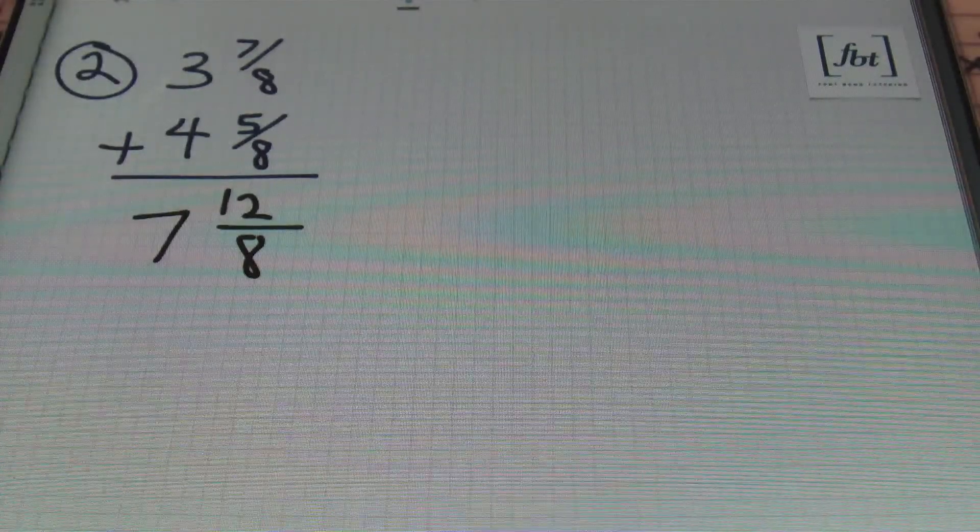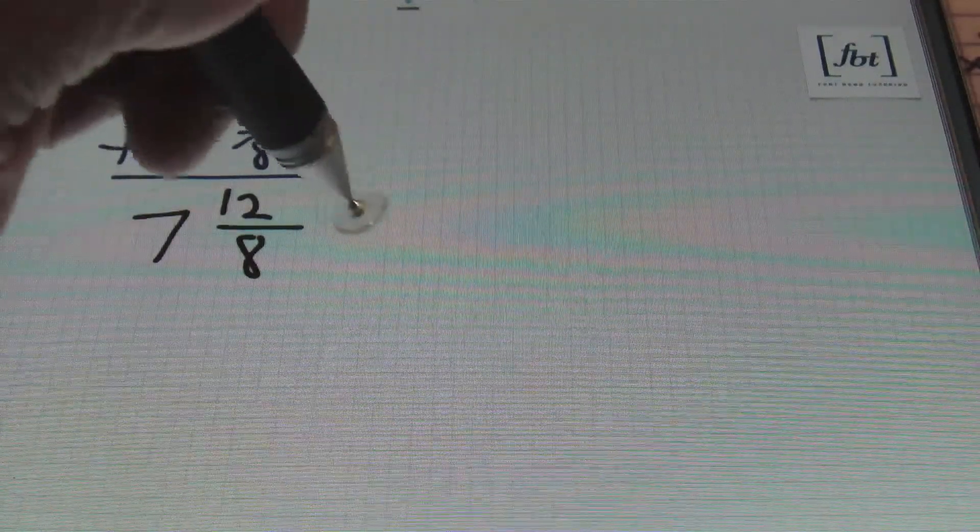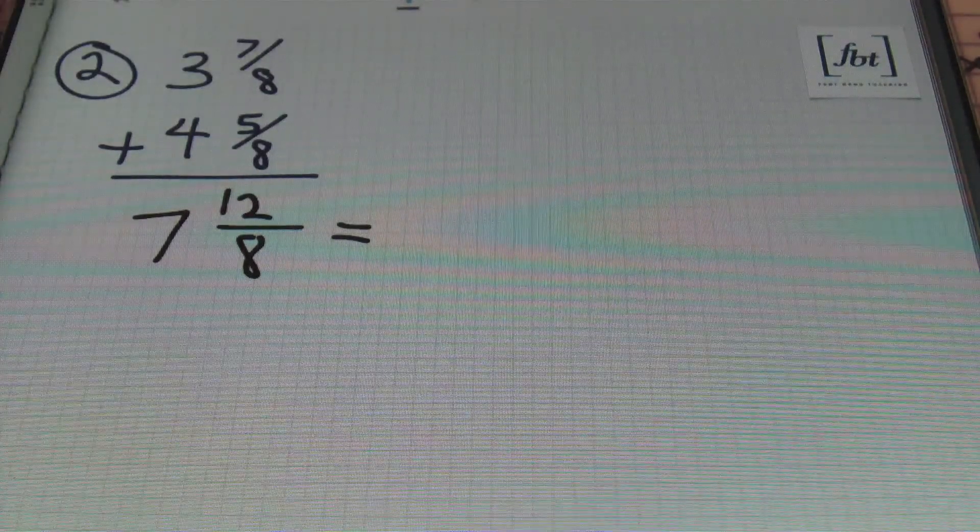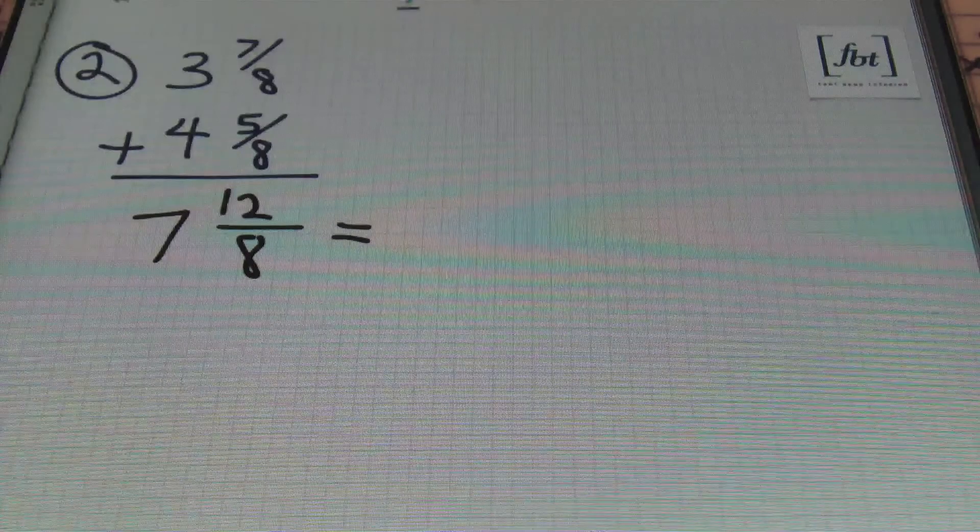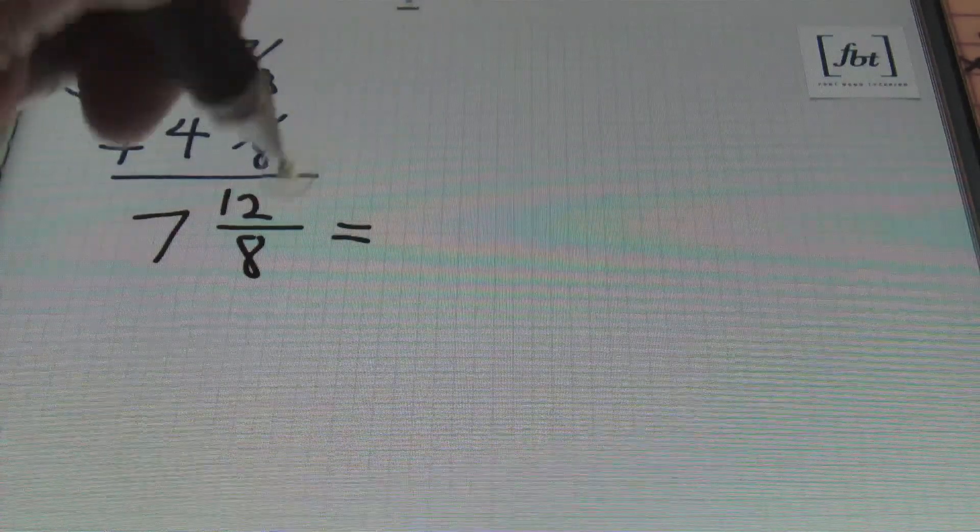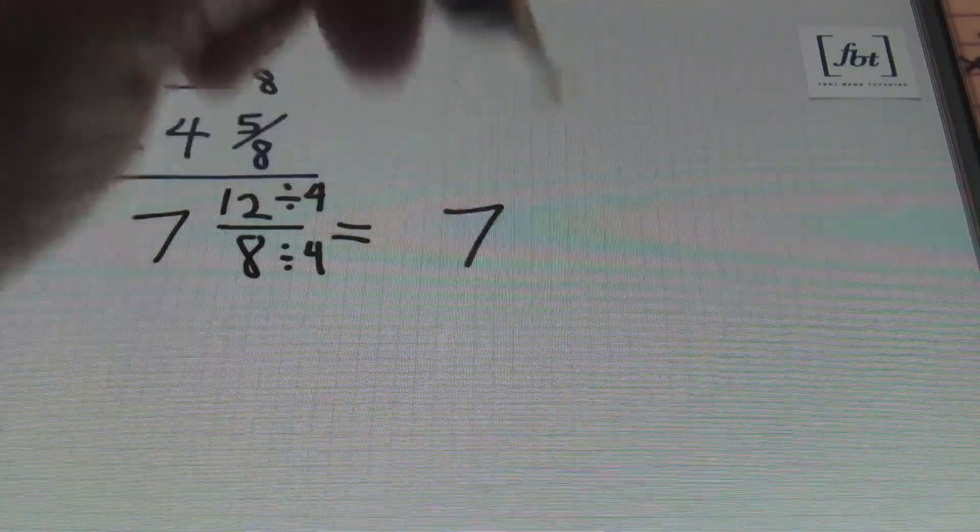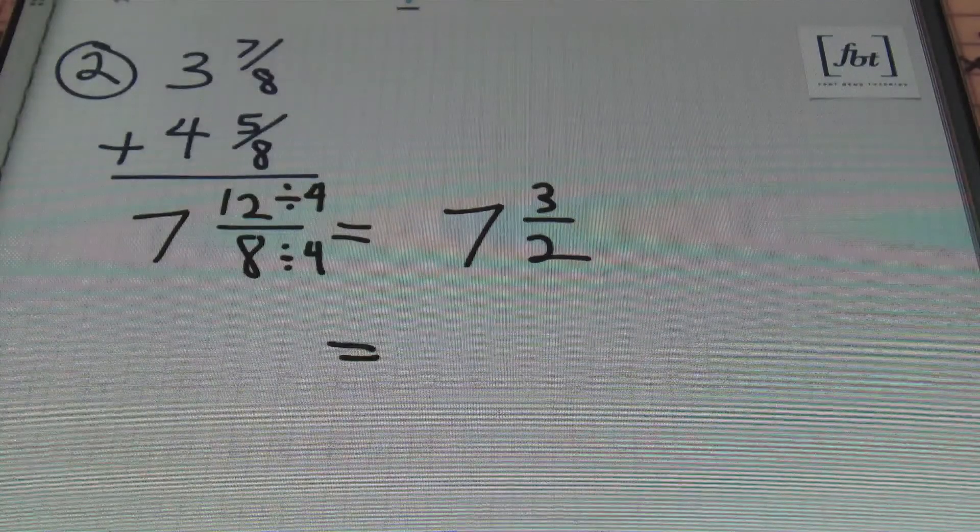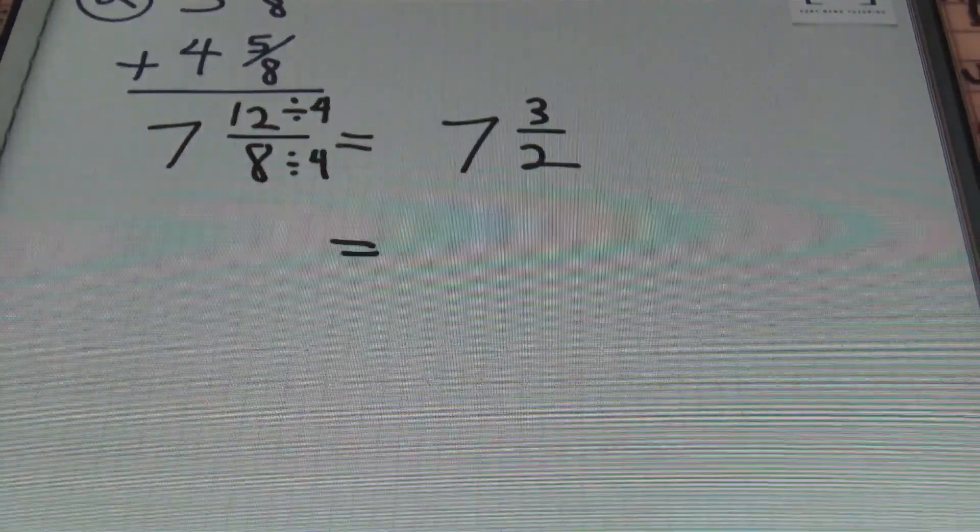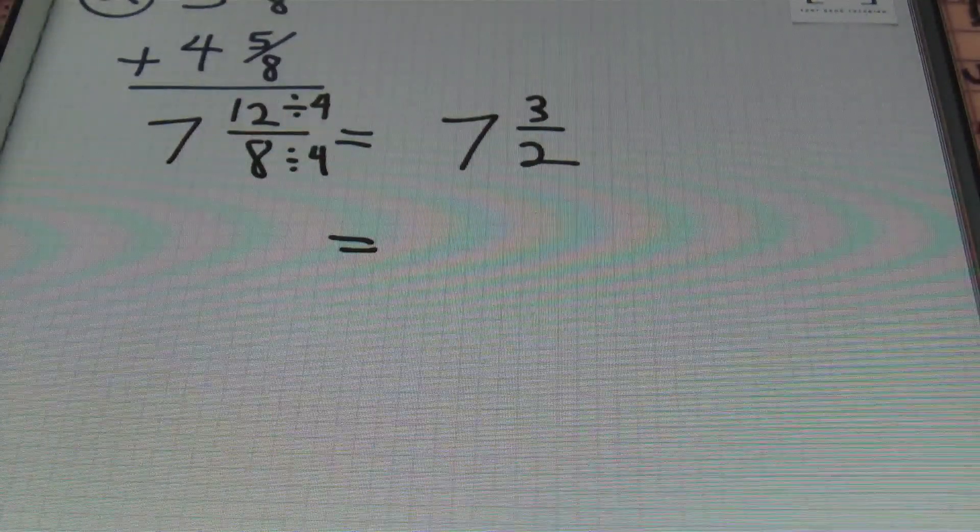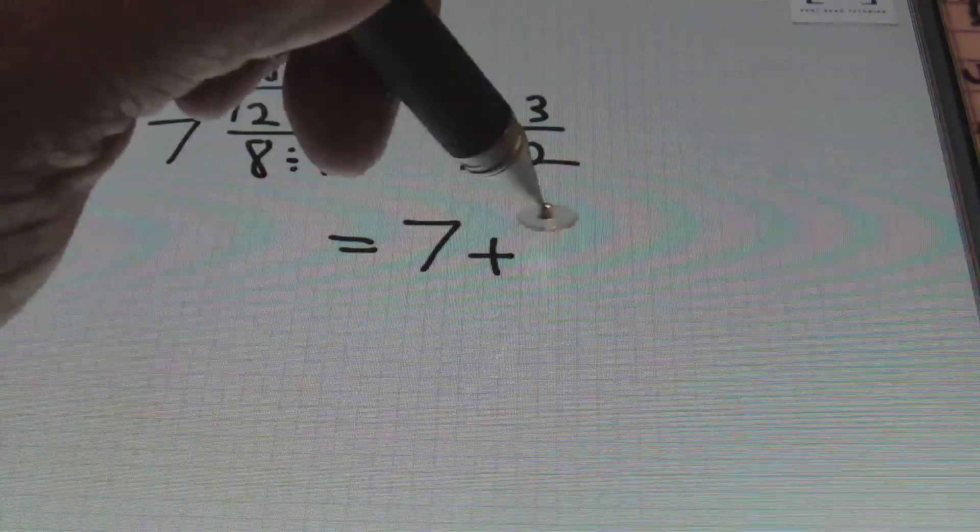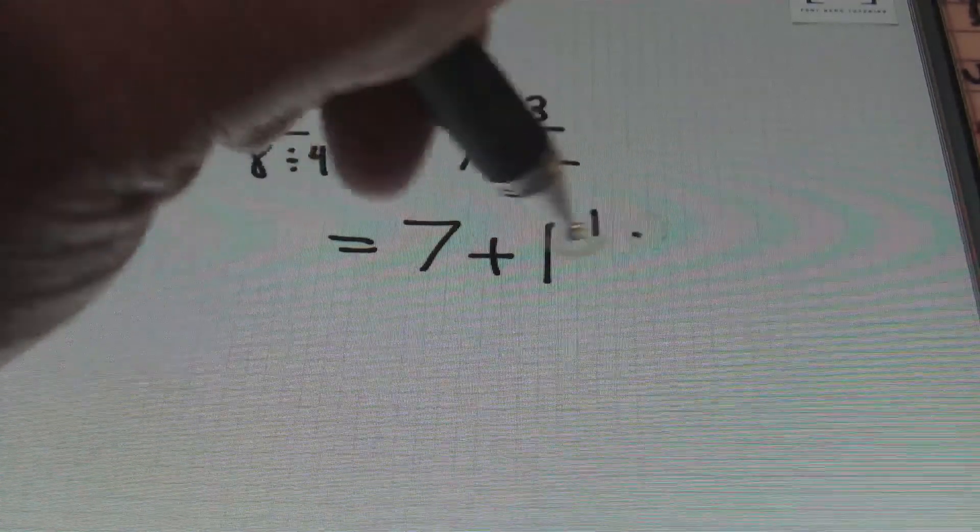So I need to take care of two things in this problem. The first thing I need to take care of is the fact that my fraction is not simplified. I know that both 12 and 8 can be reduced by 4. So by dividing the numerator and the denominator by 4 I end up with 7 and 3/2. Okay just like that. Then we're not going to leave an improper fraction in our mixed number. So I'll have my whole number 7 plus 2 goes into 3 once and I'm left with 1 over.